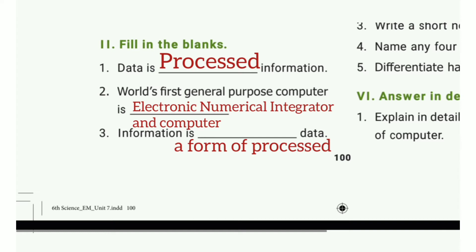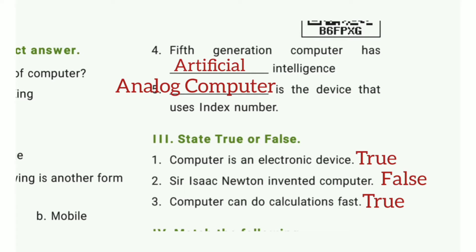Third one: Information is blank data. The answer is a form of processed data. Fourth one: Fifth generation computer has blank intelligence. The answer is artificial intelligence. Fifth one: Blank is the device that uses index numbers. The answer is analog computer.